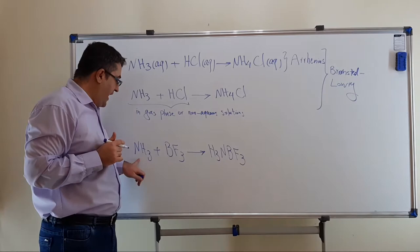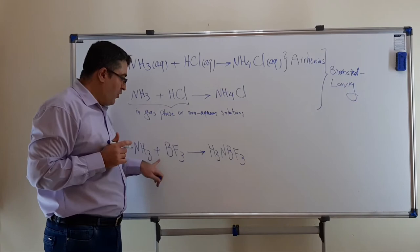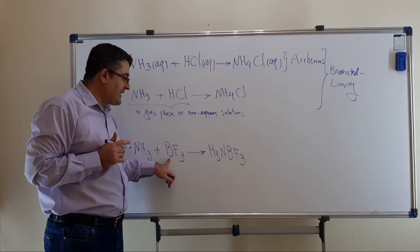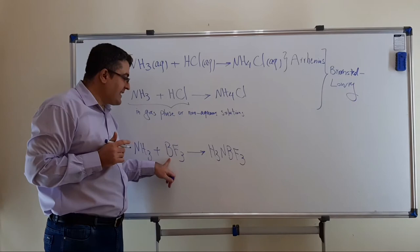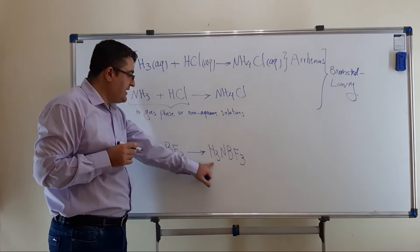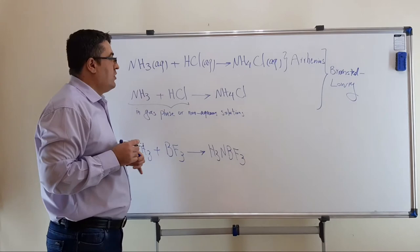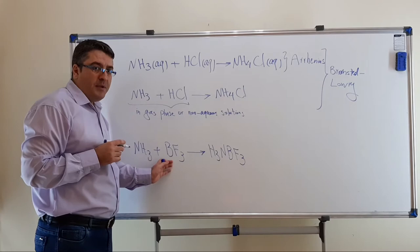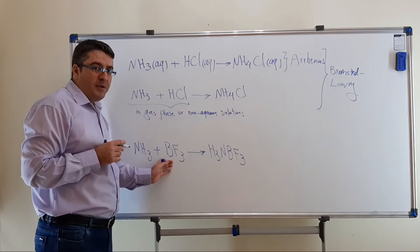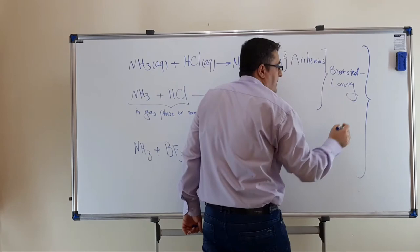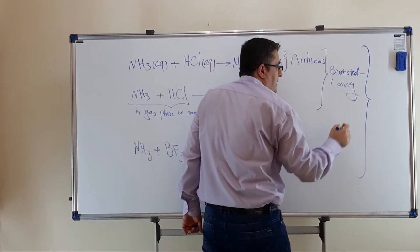The third reaction — NH3 plus BF3 — is a Lewis acid-base reaction. NH3 acts as an electron pair donor to the boron atom of boron trifluoride, which acts as an electron pair acceptor, and we have the formation of a Lewis adduct. In addition, we have a similar situation in the first two reactions. In all of these reactions, ammonia acts as an electron pair donor — in the third reaction to the boron atom of BF3, and in the first two reactions to the H+ produced by HCl. So all of these reactions can be considered as Lewis acid-base reactions.